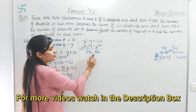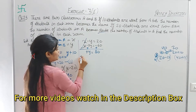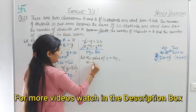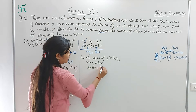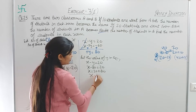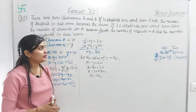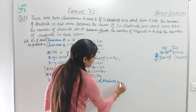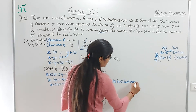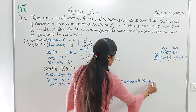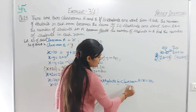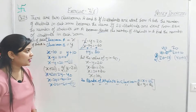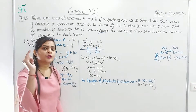That means the number of students in classroom B, y, equals 80. Now find x by putting y equals 80 into equation 1: x minus 80 equals 20, so x equals 100. Therefore, the number of students in classroom A is 100 and in classroom B is 80. The statement must be understood clearly — once it is, the equations follow easily.